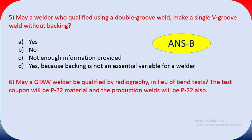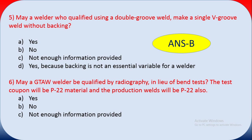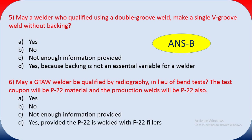Question six: may a GTAW welder be qualified by radiography in lieu of a bend test if the test coupon is P22 material and the production welds will also be P22? Yes — if the weld test coupon is P22 material, the production should also be P22. Options: A yes, B no, C not enough information, D yes provided P22 is welded with P22 filler. The answer is A.